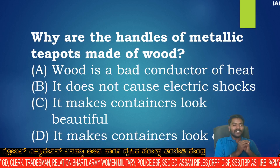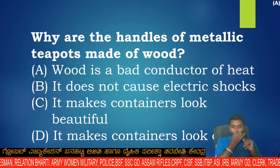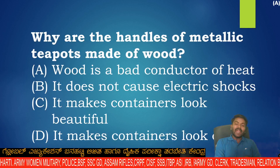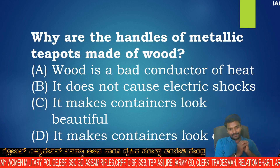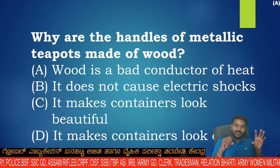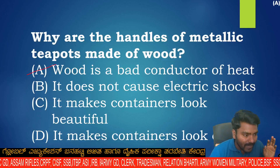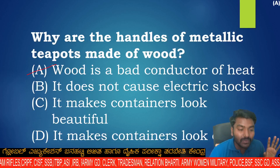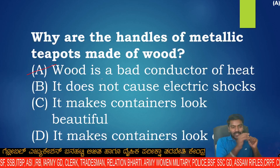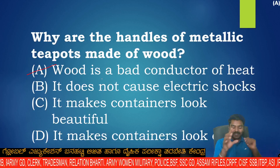Wood is a bad conductor of heat. Because wood is a bad conductor of heat, it is used to make handles of metallic teapots. Which of the following is a bad conductor of heat? The answer is wood — wood is the bad conductor of heat. This is very, very important.